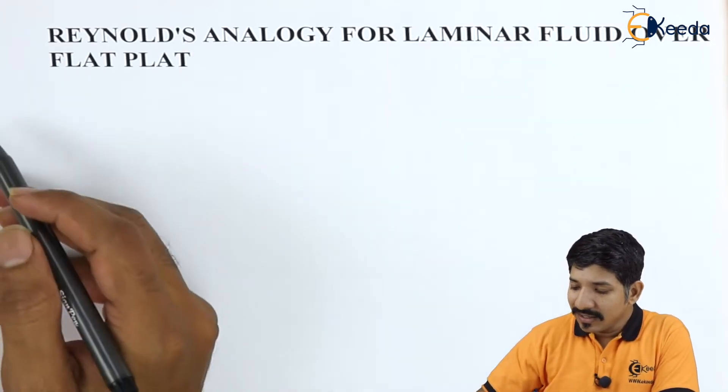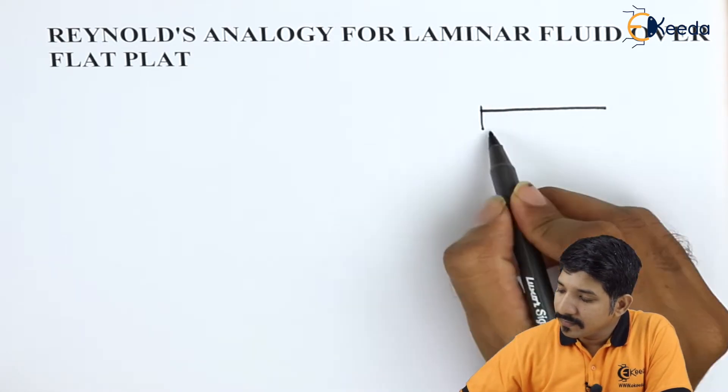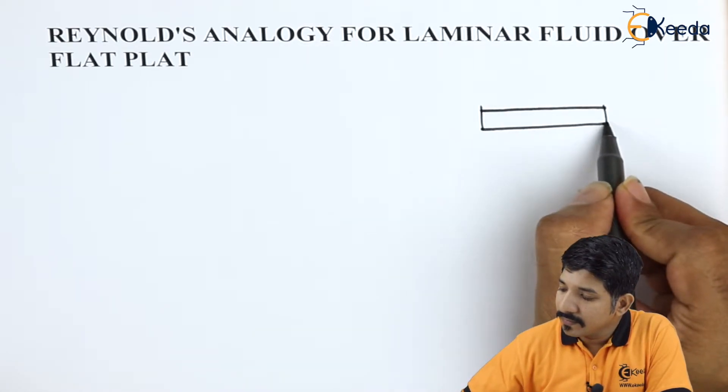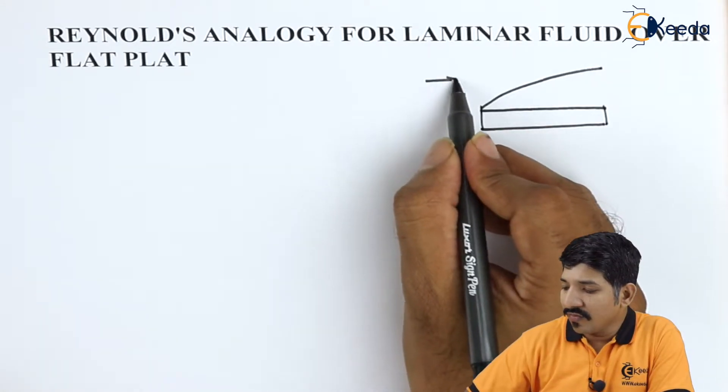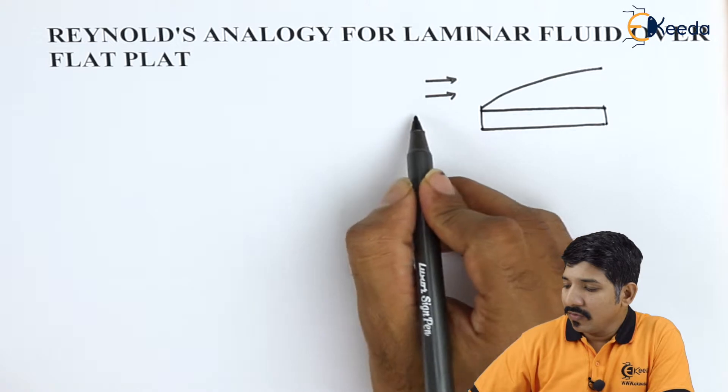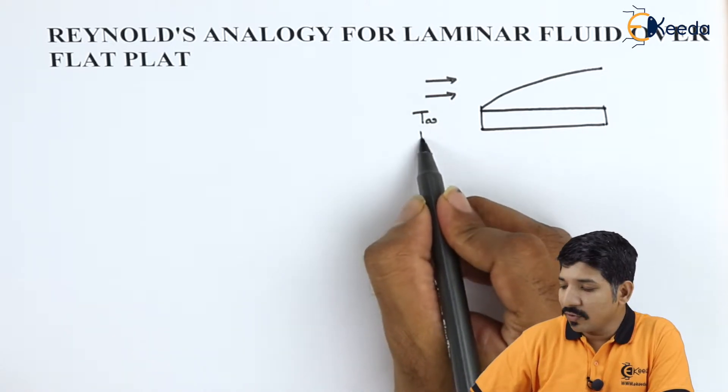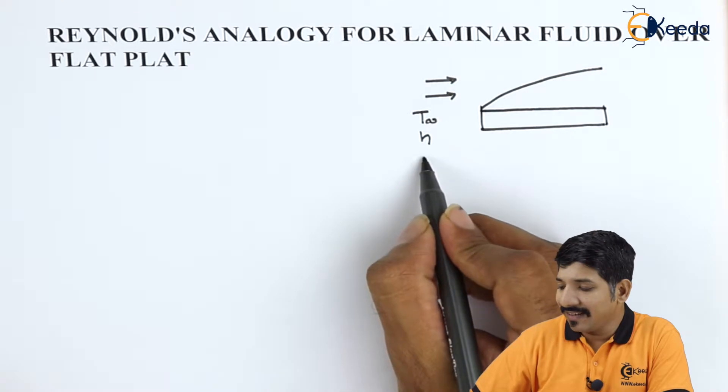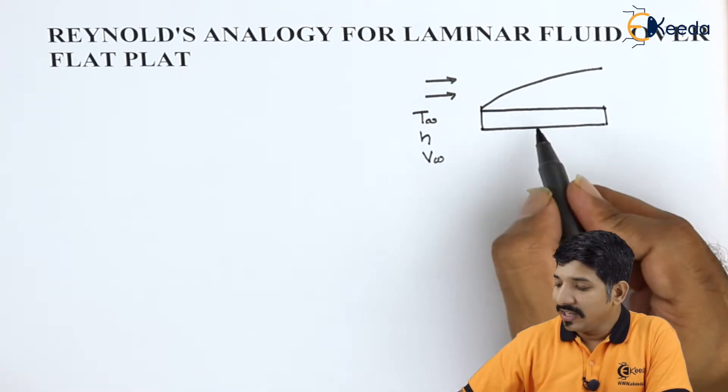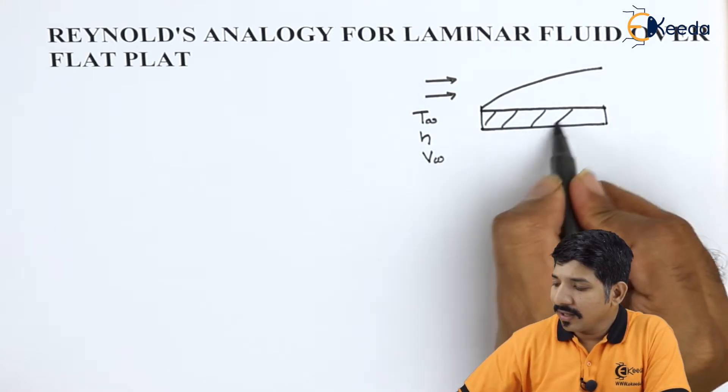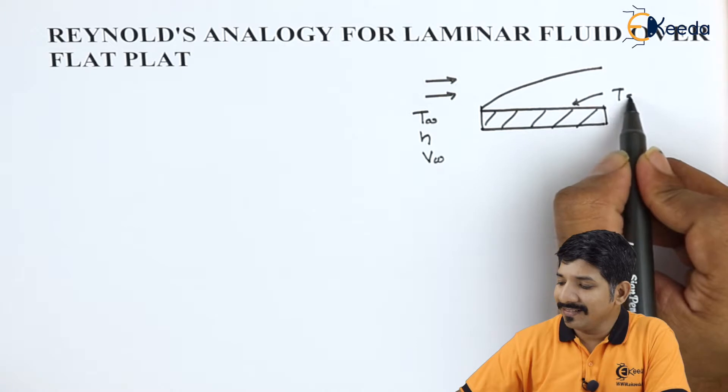For this, let us consider a simple flat plate. Let us say some fluid is flowing over a flat plate whose temperature is T infinity. The heat transfer coefficient is H and velocity is V infinity. If this is the case, let us say the surface temperature is kept as Ts.